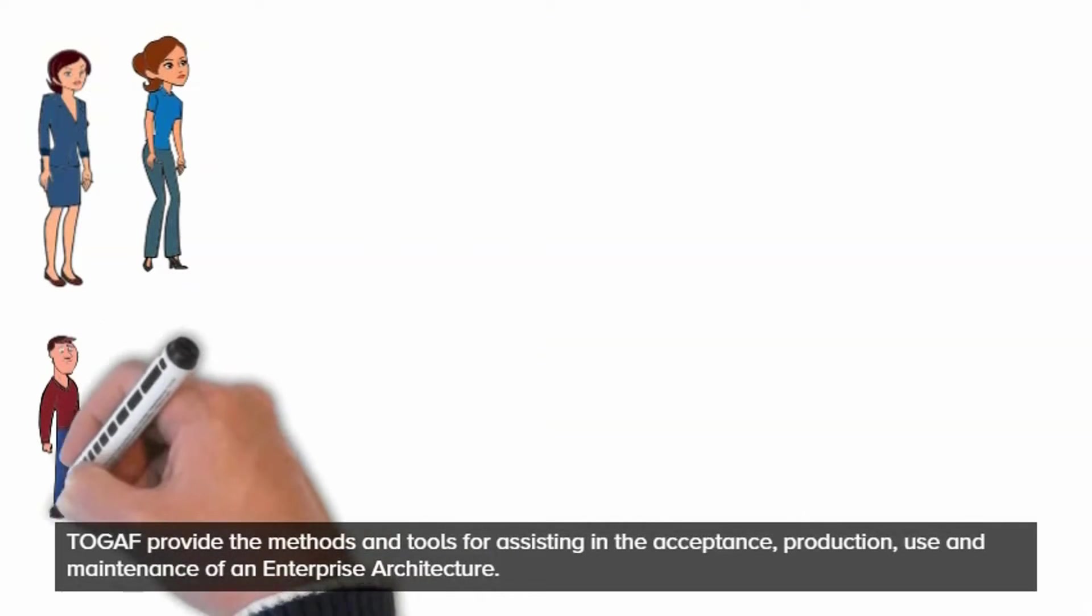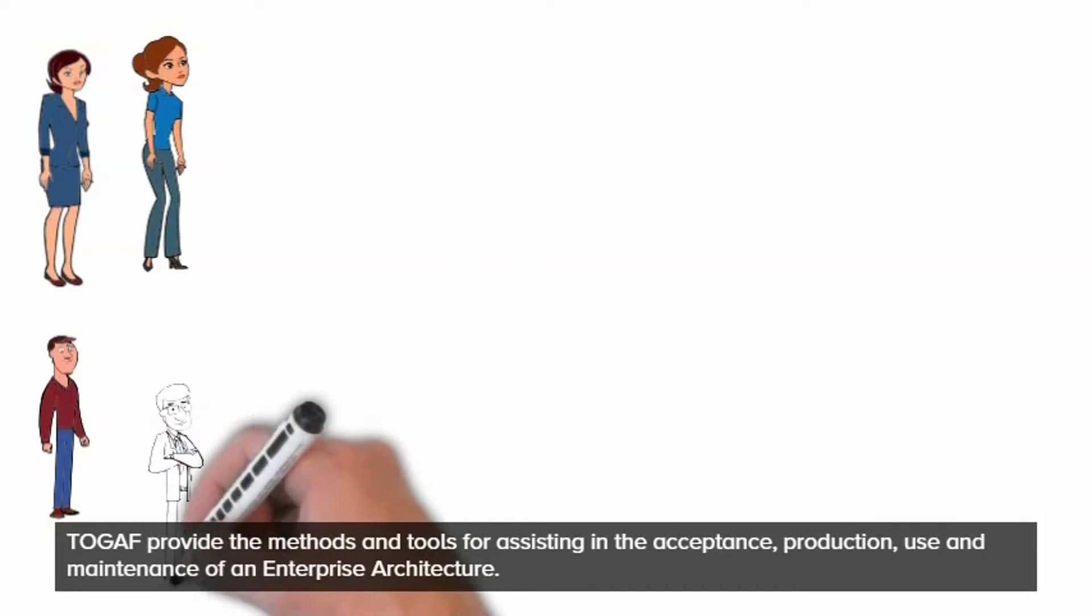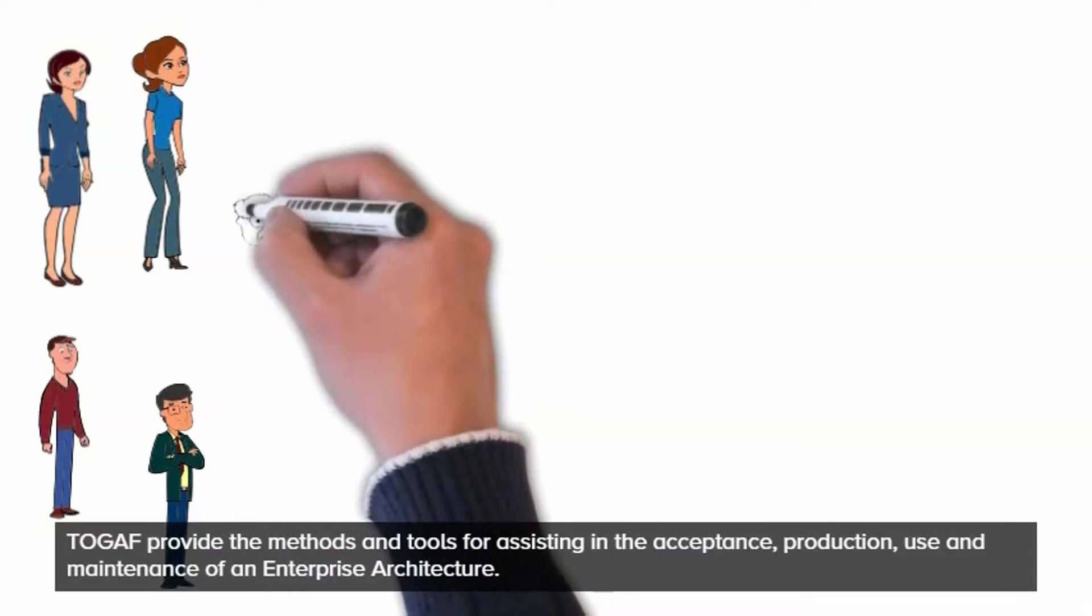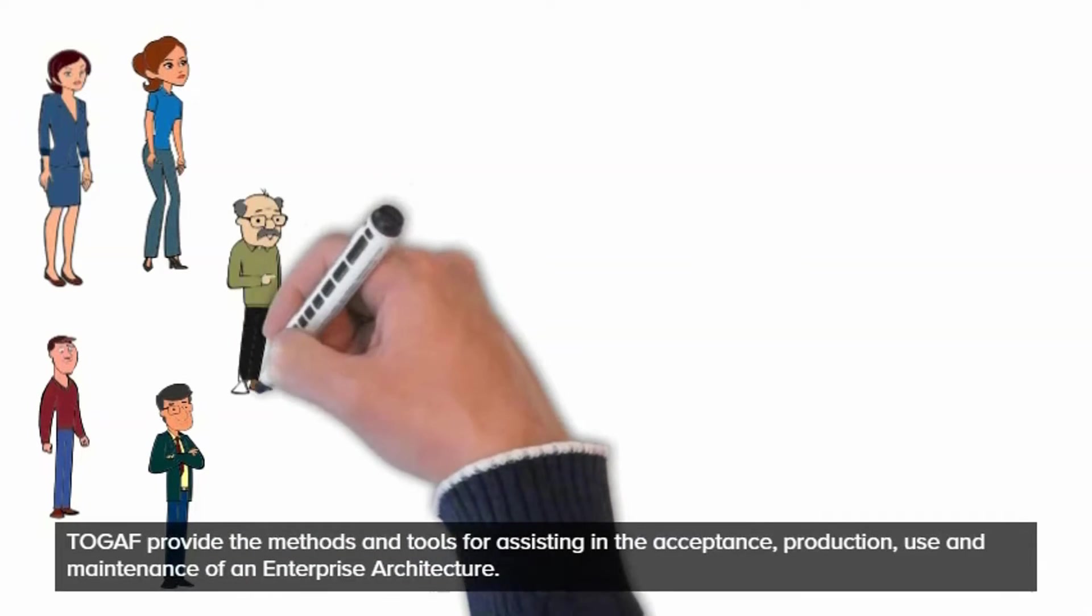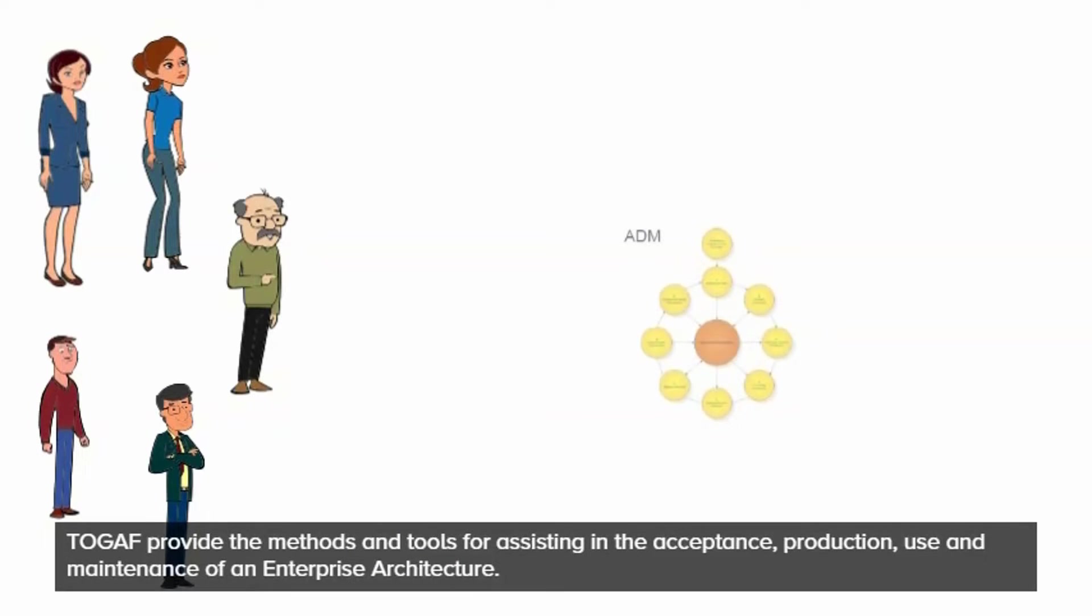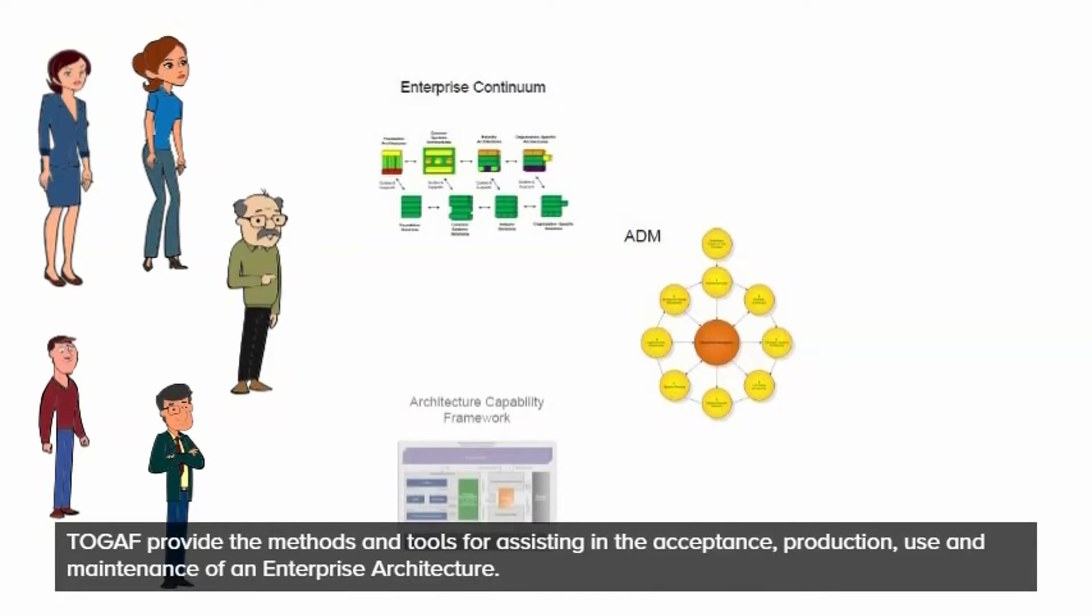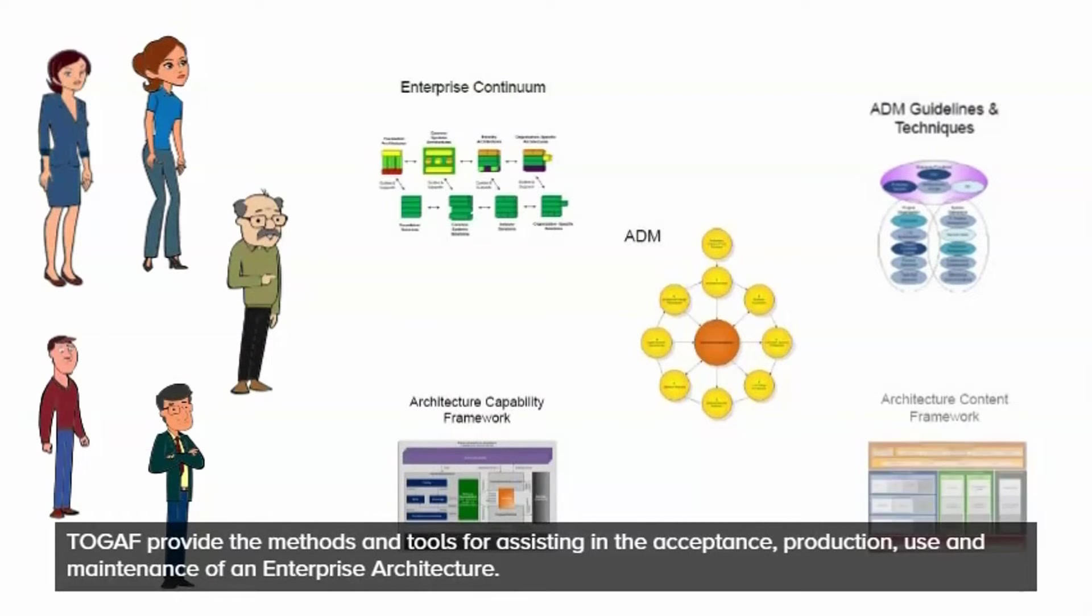TOGAF provides the methods and tools for assisting in the acceptance, production, use and maintenance of an enterprise architecture. The five concepts defined here need to be understood and remembered while working with TOGAF. The TOGAF library, which is also built around this, is a reference library containing guidelines, templates, patterns and other forms of reference material to accelerate the creation of new architectures for the enterprise.